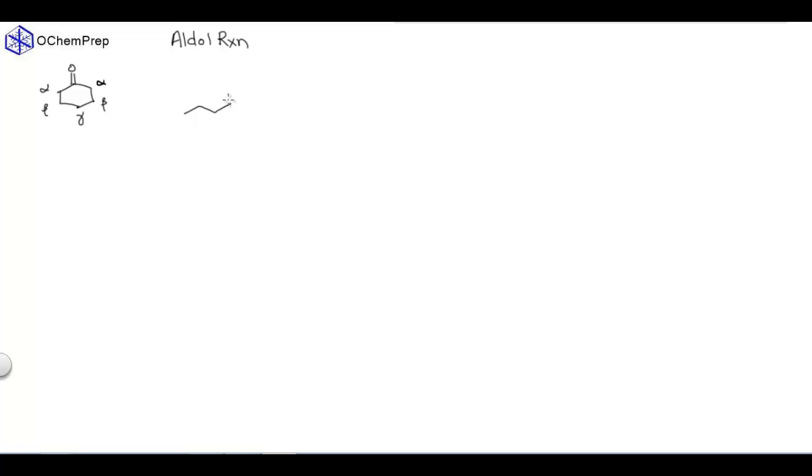So if I have butanal, this would be alpha, this is beta, and this is gamma. Now, what we're going to be looking at is the acidity of an alpha proton.